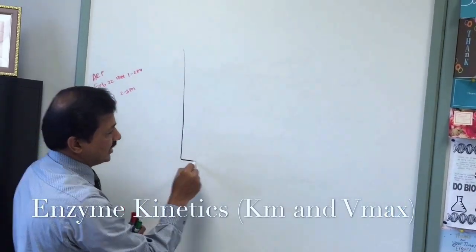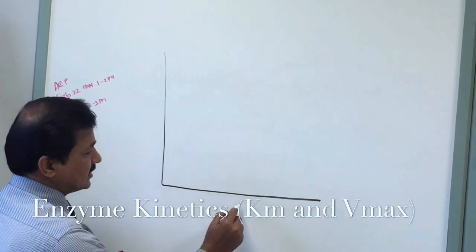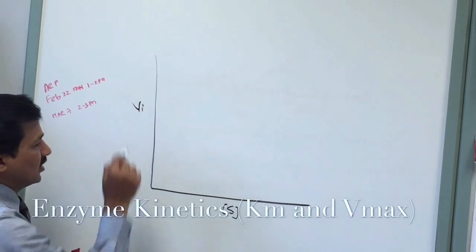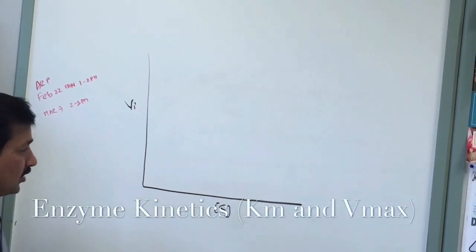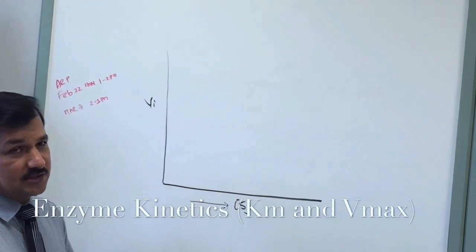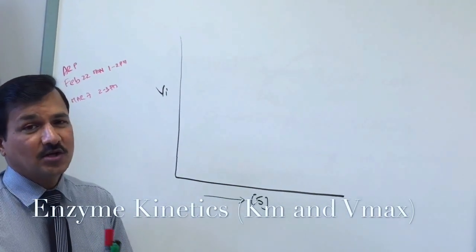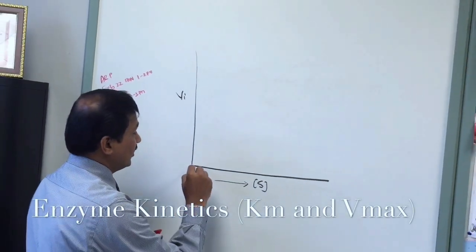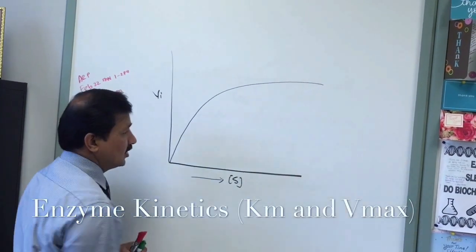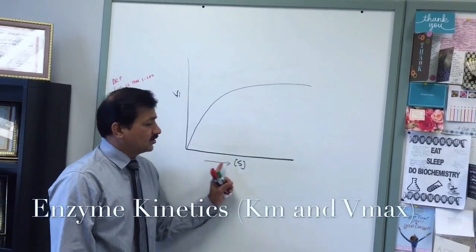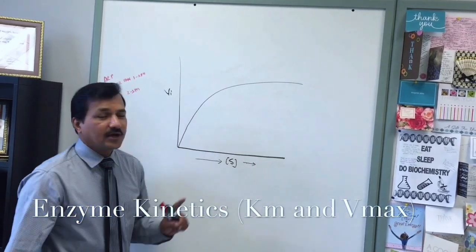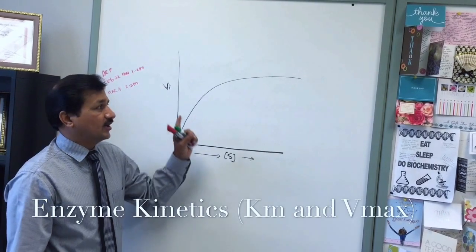I'm drawing a figure here with the x-axis indicating substrate concentration and the y-axis indicating initial velocity of the reaction. As you go on increasing the substrate concentration while keeping enzyme concentration constant, your velocity curve increases because the enzymes are constant but substrate is continuously increasing.